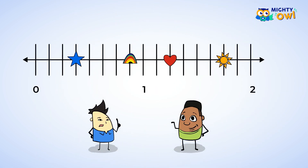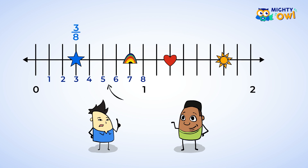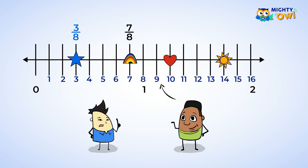This number line has all sorts of shapes. We need to find what fraction each shape is at. Let's start by looking at how many sections there are between 0 and 1 — there are 8. So the fractions will have a denominator of 8. We count to find our numerator: 1, 2, 3 — we got to the star. The star is labeled 3 eighths. Keep counting: 4, 5, 6, 7 — the rainbow is at 7 eighths. 8, 9, 10 — the heart is at 10 eighths. And the last one: 11, 12, 13, 14 — the sun is at 14 eighths.